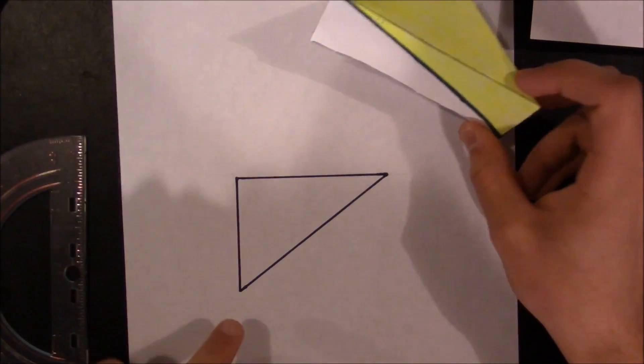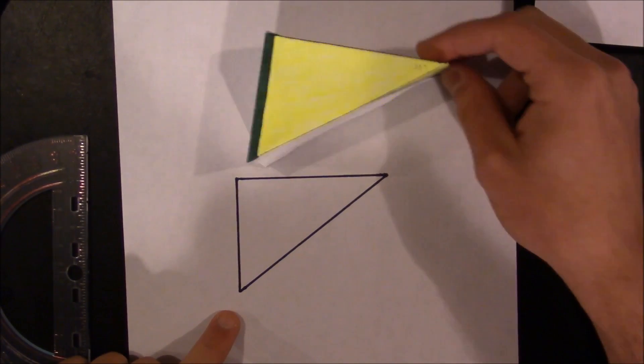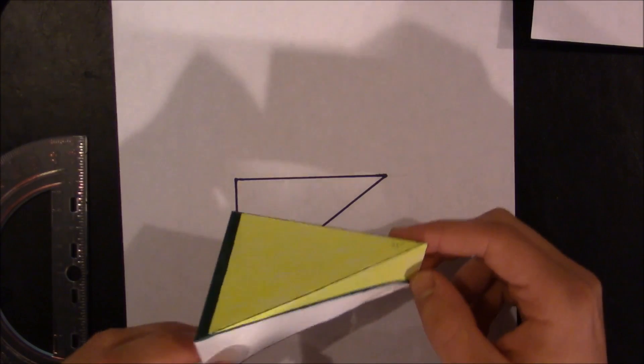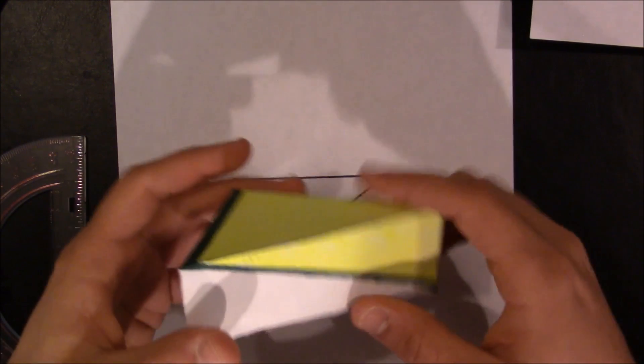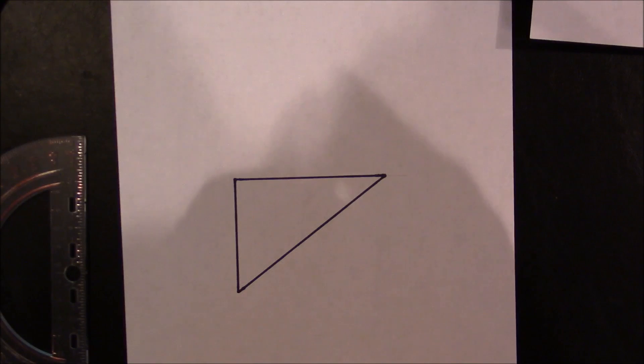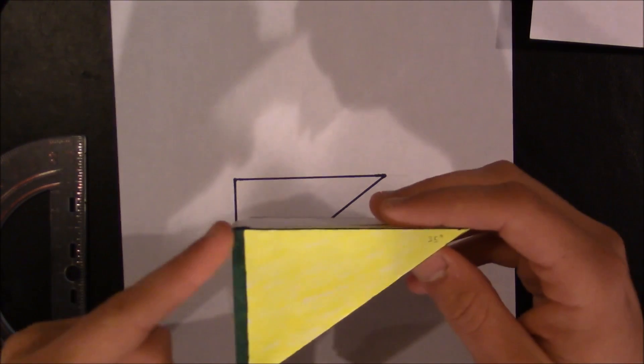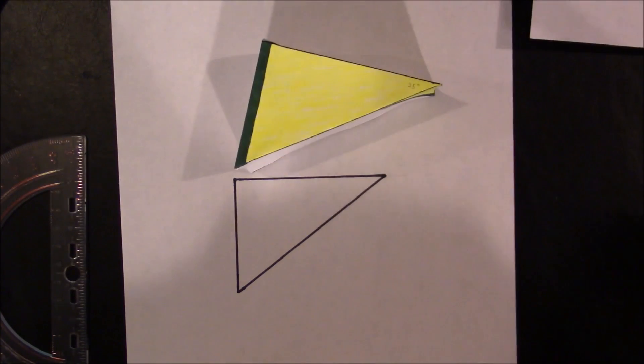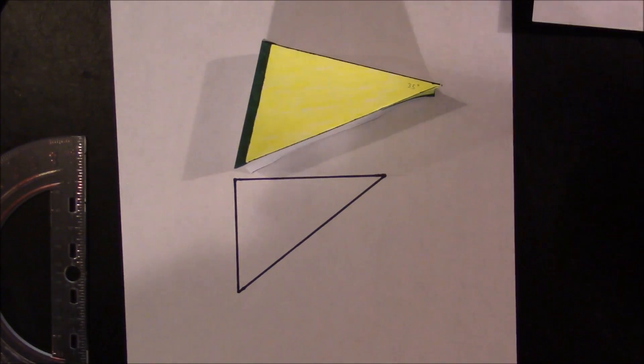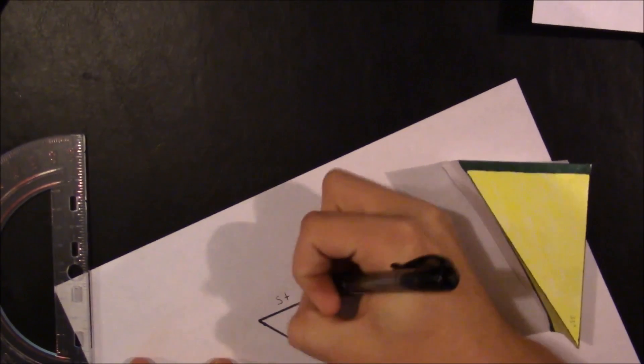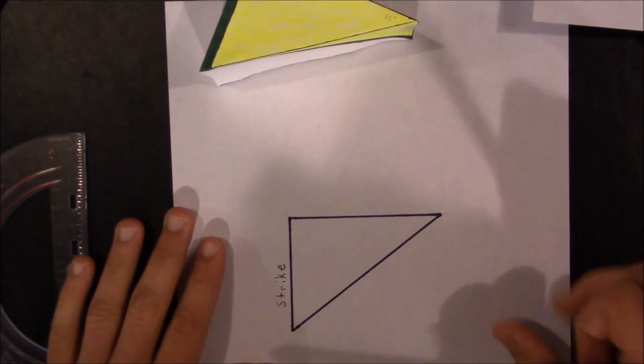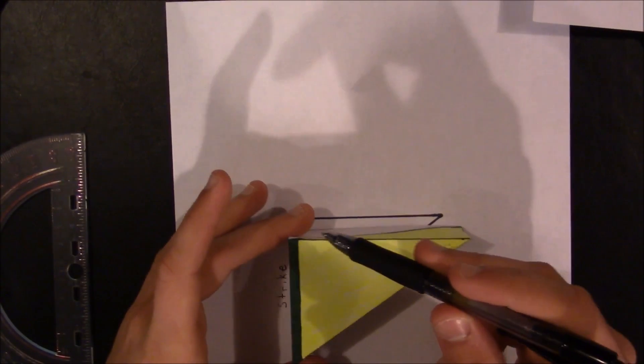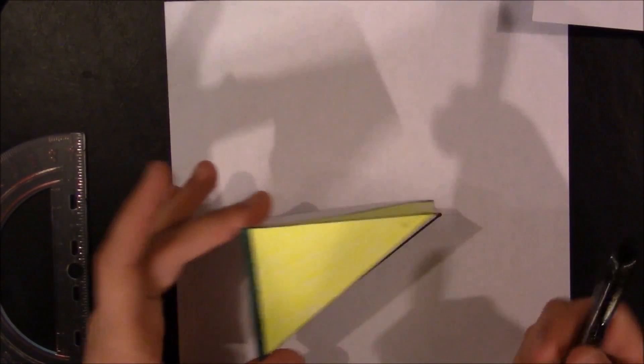So now that I have this drawn out, what I need to do is I need to now consider how am I supposed to figure out the true dip if I am given the apparent dip. So the way that this works is that I know that this line is going to be the strike. So I'm just going to go ahead and write that on here that this is the strike.